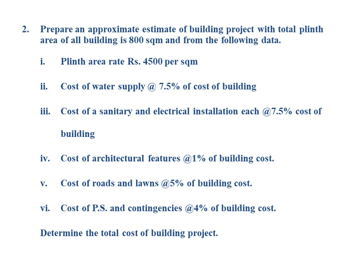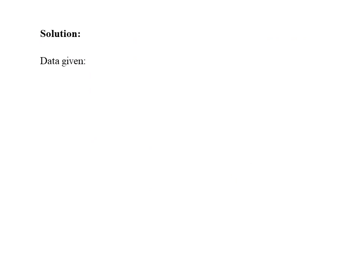Determine the total cost of the building project. The plinth area means the built-up area. Multiply the rate with the total cost per square meter. For other items, take the percentage of building cost and calculate accordingly. We need to find the total cost of the building project.